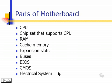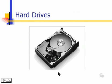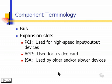Components that the electrical system provides electricity and data to include hard drives, buses, and expansion slots. Types of expansion slots include PCI, which is used for high-speed input-output devices; AGP, usually used for video cards; and ISA slots, which are used by older and slower devices. We'll be discussing these in greater detail in later lessons as well.